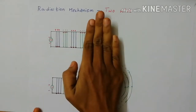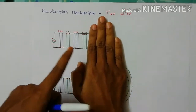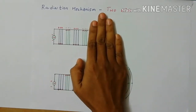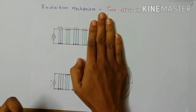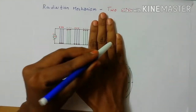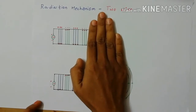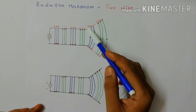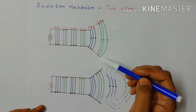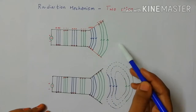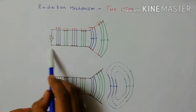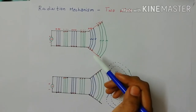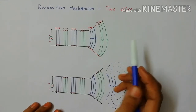If I remove the tapering portion, this part is simply a transmission line. For a transmission line, at one end we give supply and at the other end we connect a load — it is closed. But for antennas, the other end should always be open, with a source on one side. From this diagram I am going to explain the two-wire mechanism of an antenna.